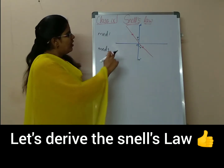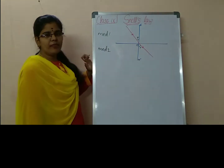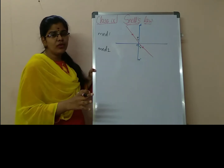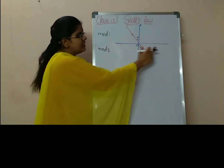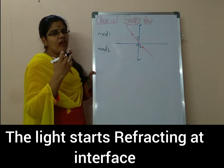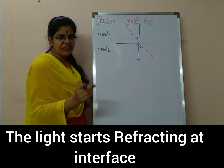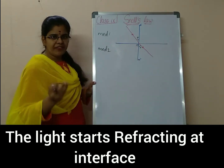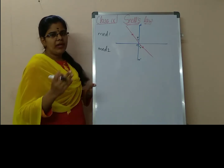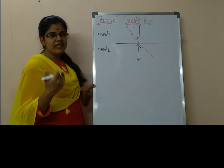So let us derive this Snell's law. This is the interface of the two mediums — this is medium one and this is medium two. It might be rarer to denser or denser to rarer. So this is the interface. The light will be bending or refracting from the incidence after touching the interface, the light starts refracting, either towards the normal or away from the normal.